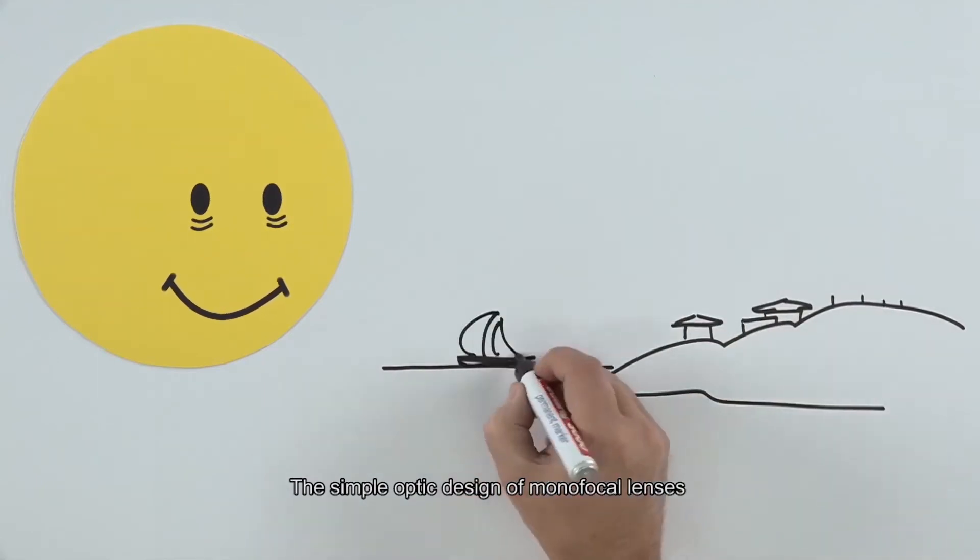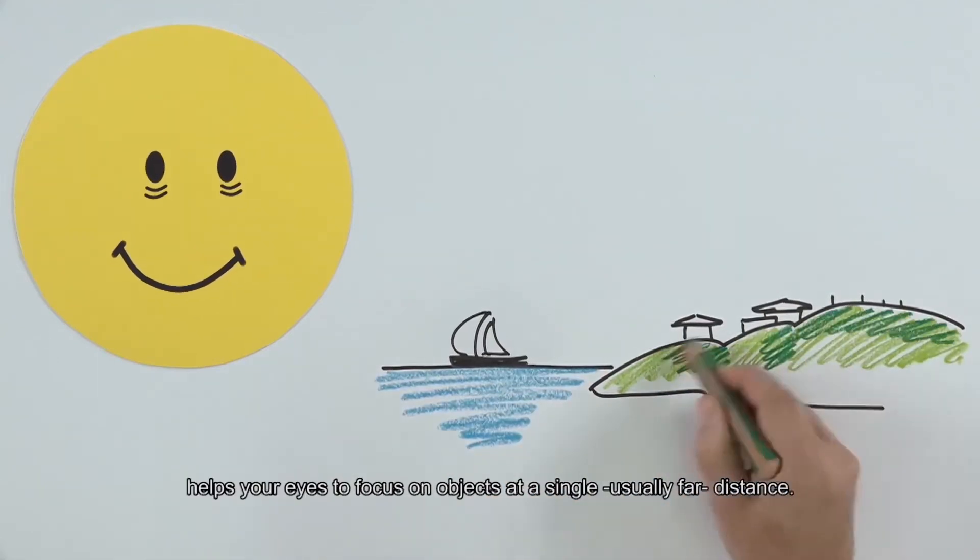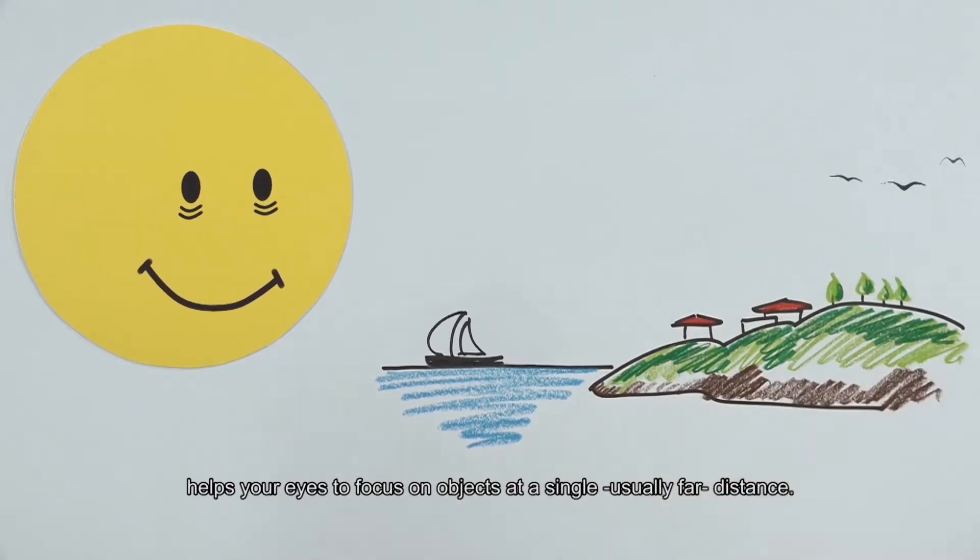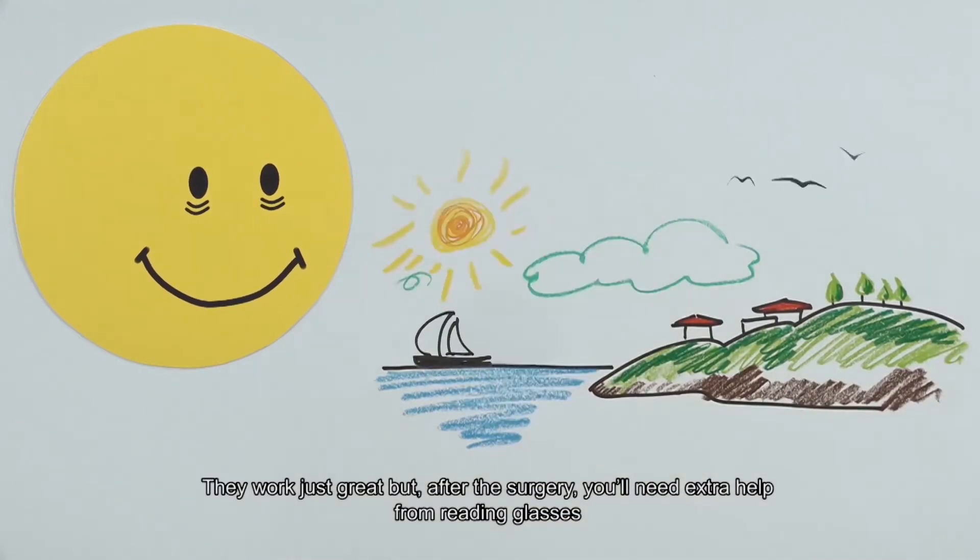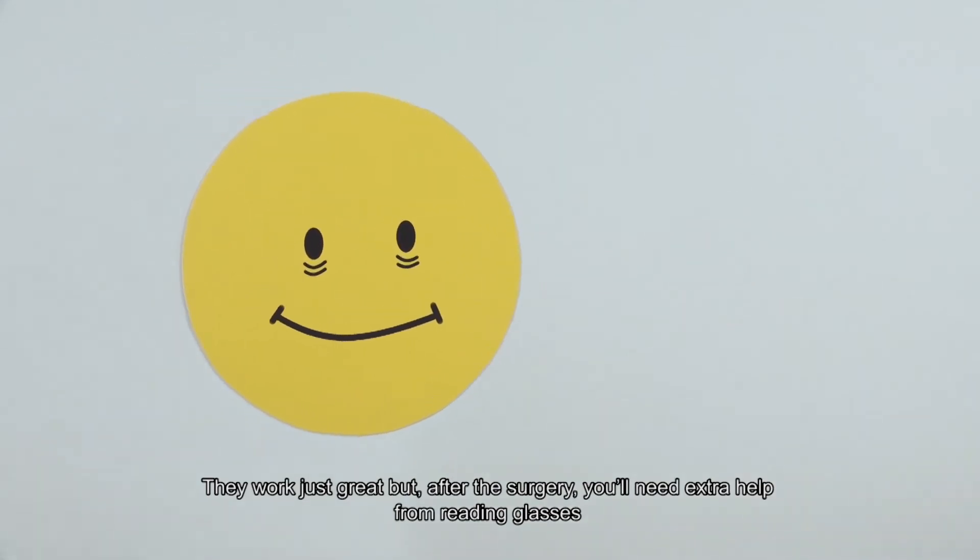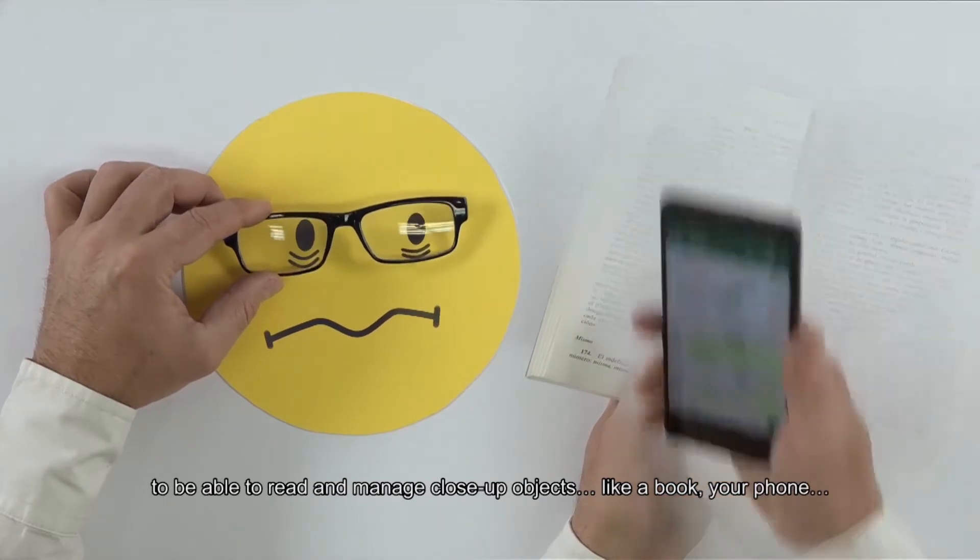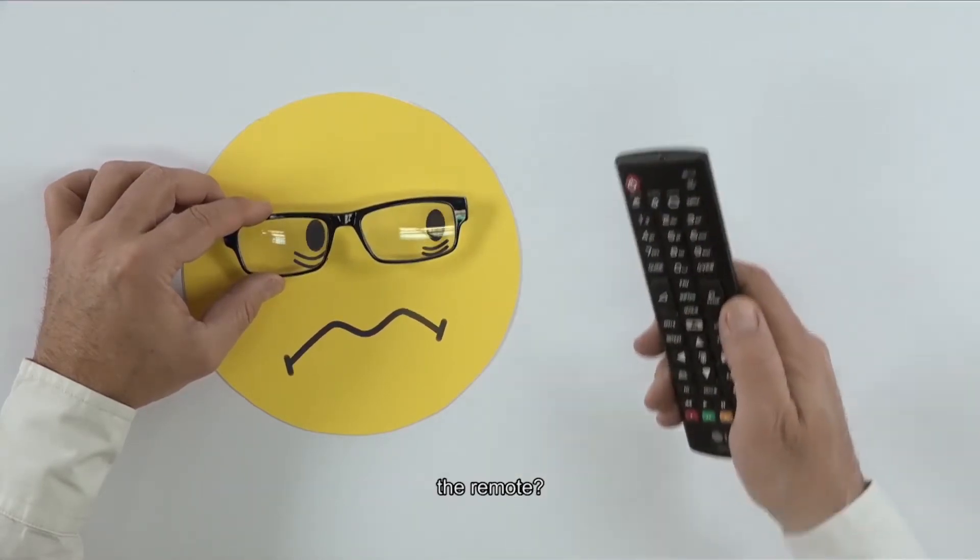The simple optic design of monofocal lenses helps your eyes to focus on objects at a single, usually far, distance. They work just great, but after the surgery you'll need extra help from reading glasses to be able to read and manage close-up objects, like a book, your phone, the remote.